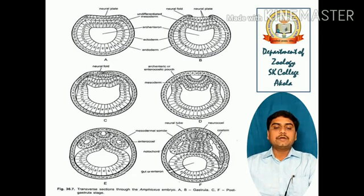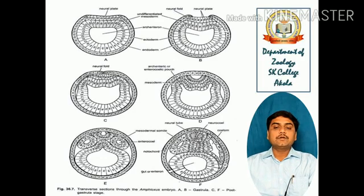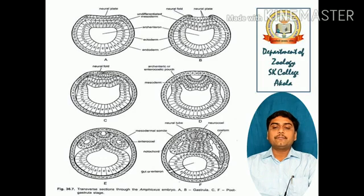The diagrammatic representation shows a transverse section through the Amphioxus embryo. Diagrams A and B are of the gastrula; C to F are post-gastrulation stages. Figures A and B clearly show the blastula having the neural plate at the upper surface. For a 12-mark question, students must draw this particular diagram for gastrulation — it is the most important diagram from a marking perspective. The undifferentiated mesoderm, archenteron, ectoderm, endoderm, neural fold, and neural plate are all visible in the blastula diagrams, covering early and late blastula.